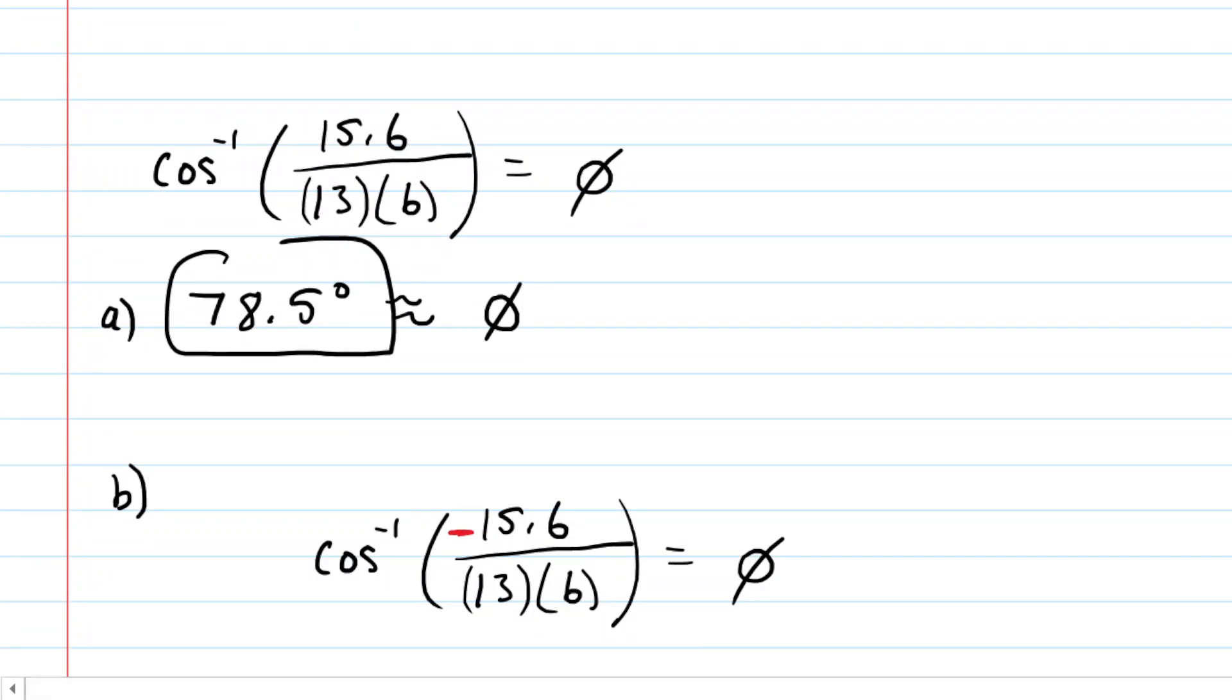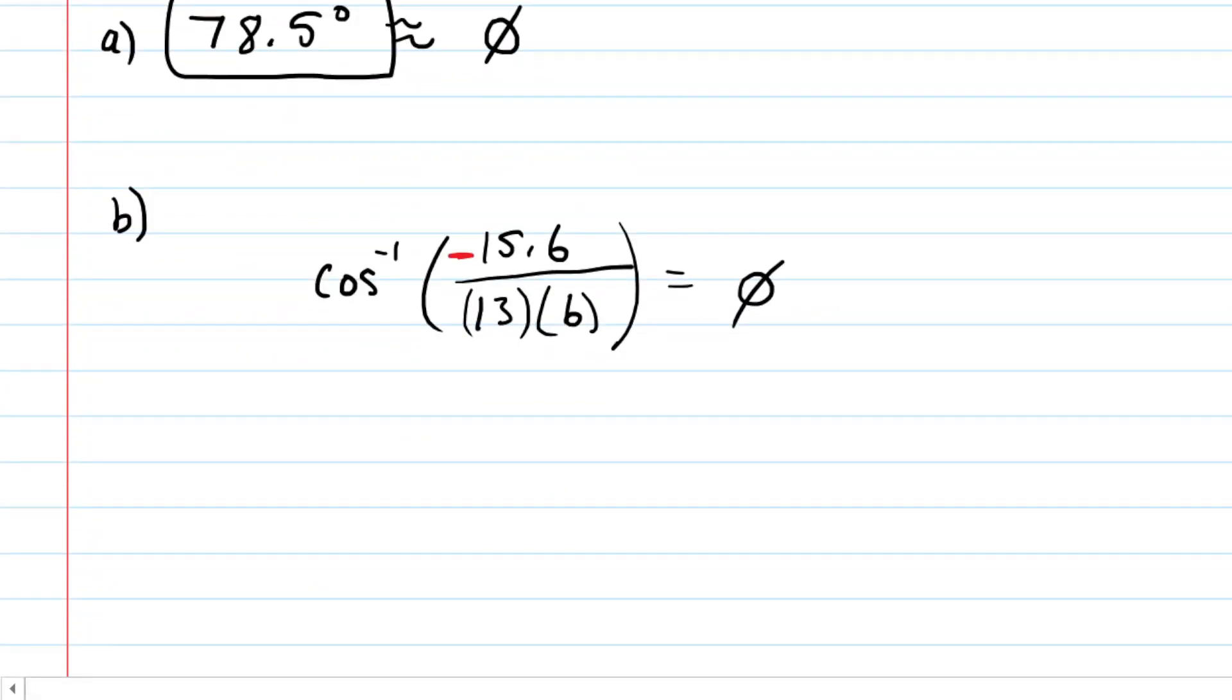We can copy and paste what we did in part A, and then just change the positive 15.6 into a negative 15.6. We'll pick up our calculator one more time and punch in the data. This time, our angle turns out to be about 101.5 degrees. This is the correct answer for part B.